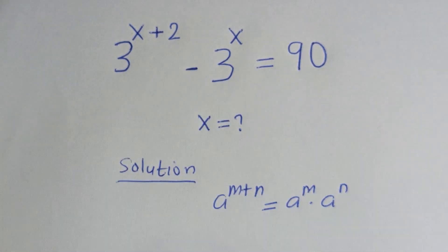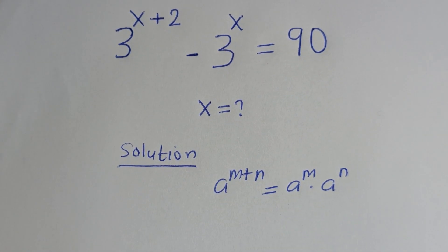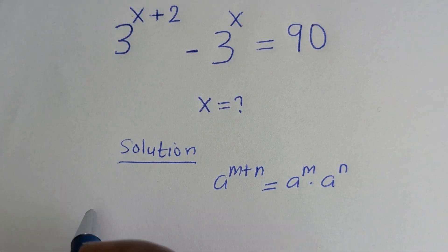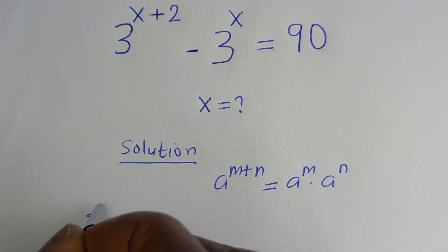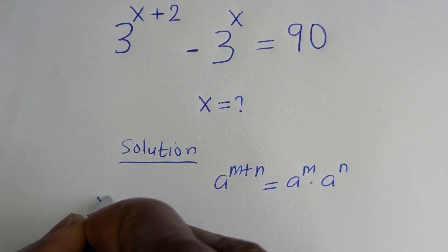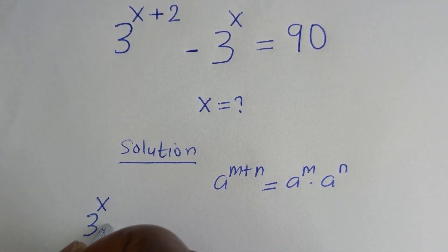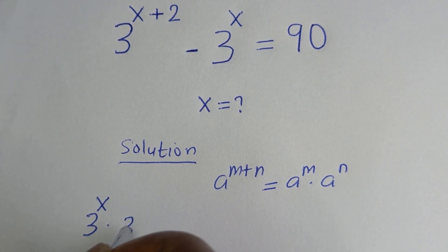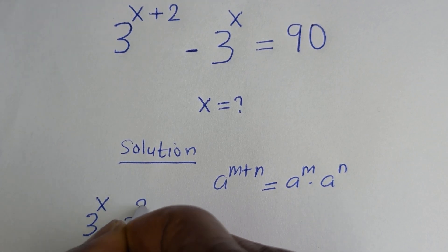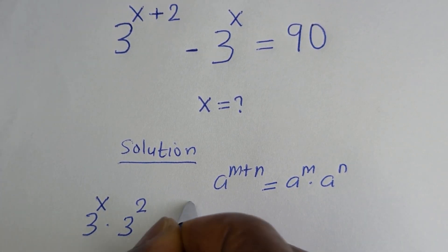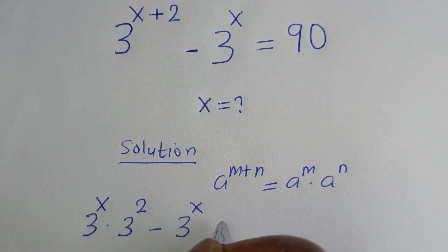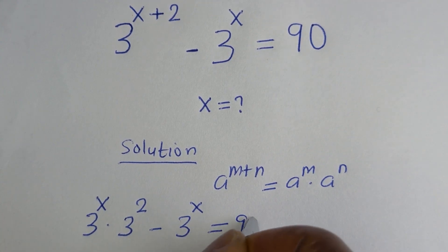Then this can be written as 3 raised to power S multiplied by 3 raised to power 2, minus 3 raised to power S, is equal to 90.